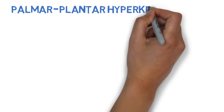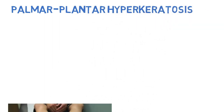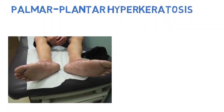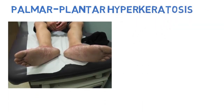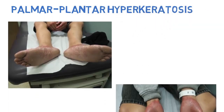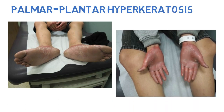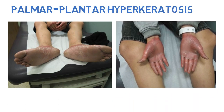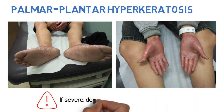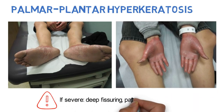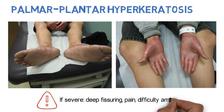Palmar plantar hyperkeratosis is characterized by redness or yellowish thickening of the palms and soles at pressure points. More severe eruptions may lead to deep fissuring, pain, and difficulty with ambulation.